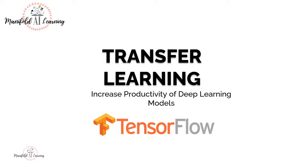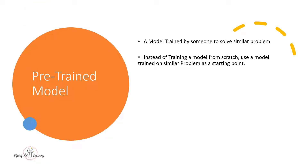I mentioned one important term: pre-trained model. A pre-trained model is a model which has already been trained by someone to solve a similar problem. In the case of transfer learning, instead of training our model from scratch, I'm going to use that model which has been trained on a similar problem and use it as a starting point — and that is what is called transfer learning.